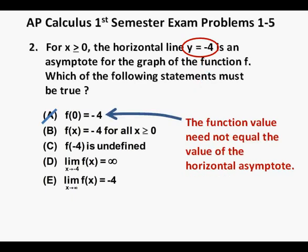Let's go down the list. Answer a has f of 0 equal to negative 4. The value of a function need not equal the value of the horizontal asymptote and in fact in most cases the value of the function never equals the value of the horizontal asymptote but approaches that value. So we can cross off answer a.